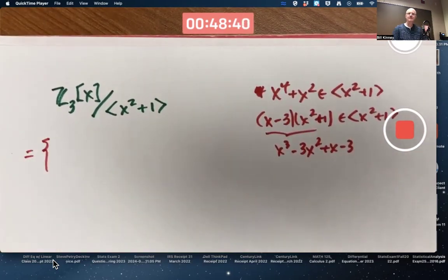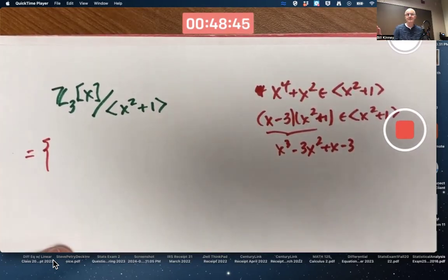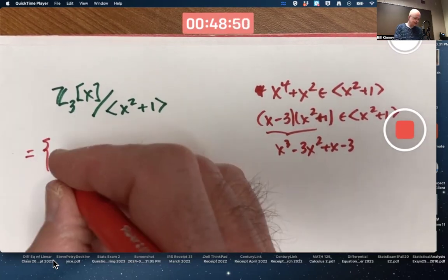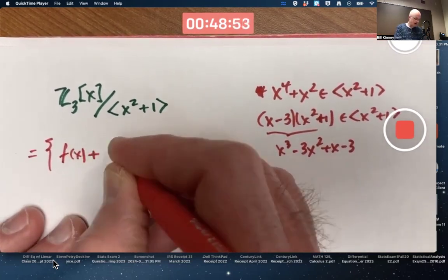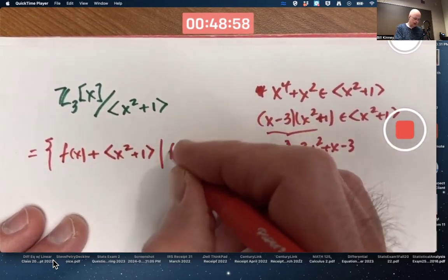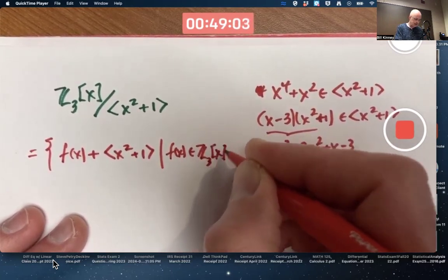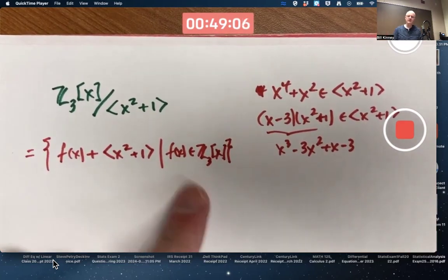Well, first of all, its elements take the form of, well, cosets. Whether you're talking factor groups or factor rings, the elements are cosets. You could say it's all cosets of this form, where f of x varies over all of Z₃[X]. Because f of x can be arbitrarily high degree, it might seem like, therefore, this is an infinite ring. But that presumption would be faulty.